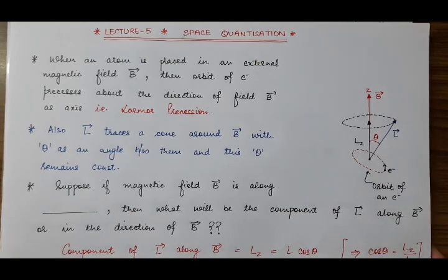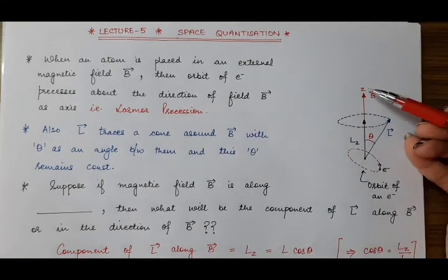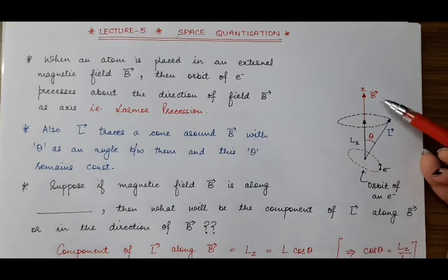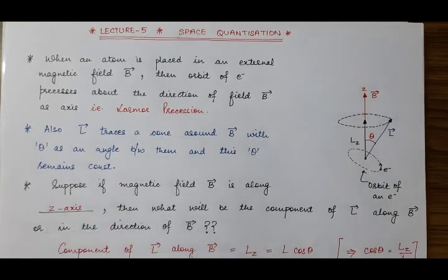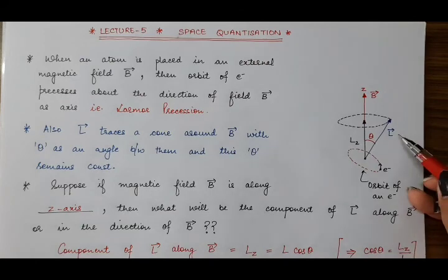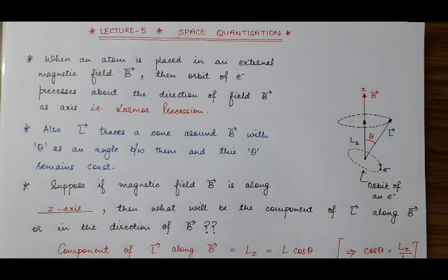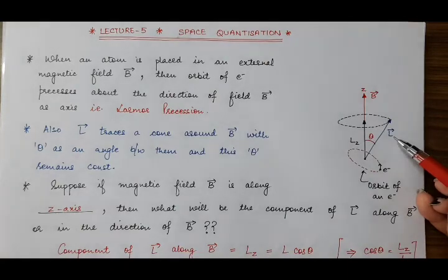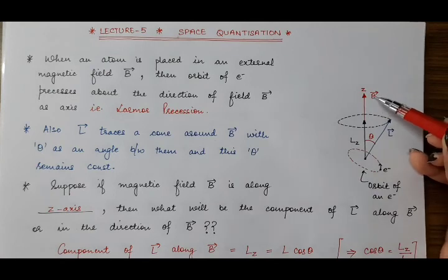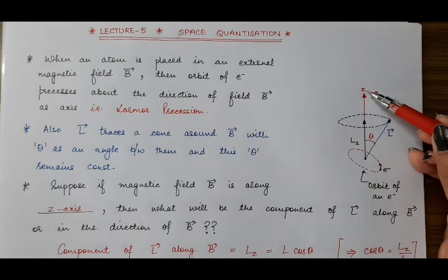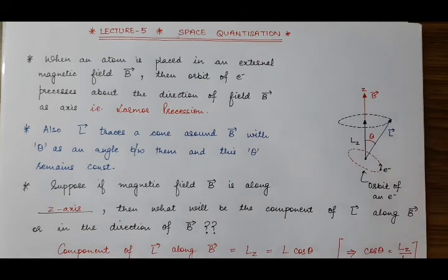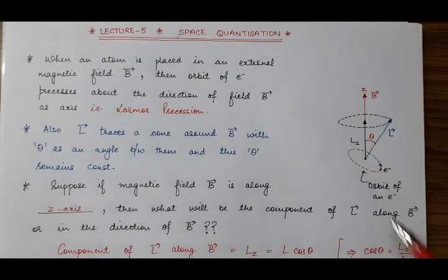Now suppose the direction of the applied magnetic field B vector is along the Z direction. The angular momentum vector L vector makes an angle theta with this B vector. We have to find the component of this orbital angular momentum vector L vector along B vector, or in the direction of B vector. Because this B vector is in the Z direction, there will be a Z component of this L vector, which we denote by LZ.